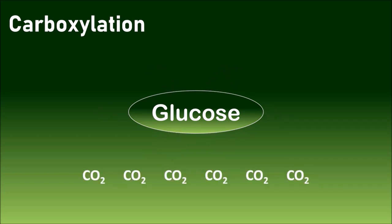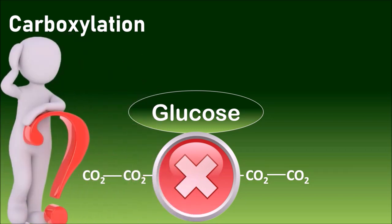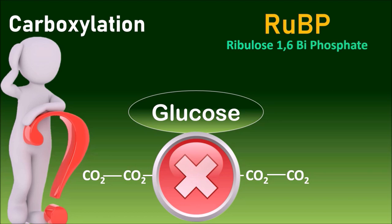Carboxylation: For the formation of one glucose molecule, six carbon dioxide molecules are required. Does it mean six carbon dioxide molecules will combine together to form glucose? No, it is hardly possible. Then how is it made possible? It is made possible by involving several intermediary compounds as well as several intermediary biochemical reactions. The important substance is ribulose 1,5-bisphosphate which starts the process of carboxylation, that is carbon dioxide fixation.